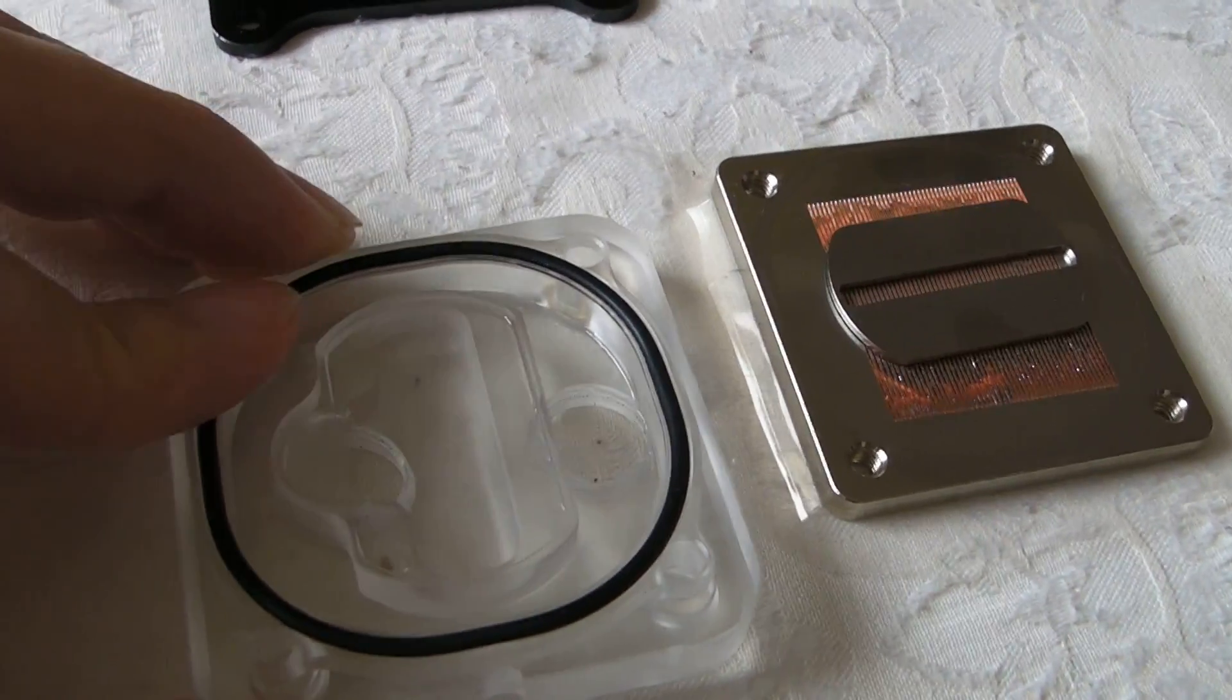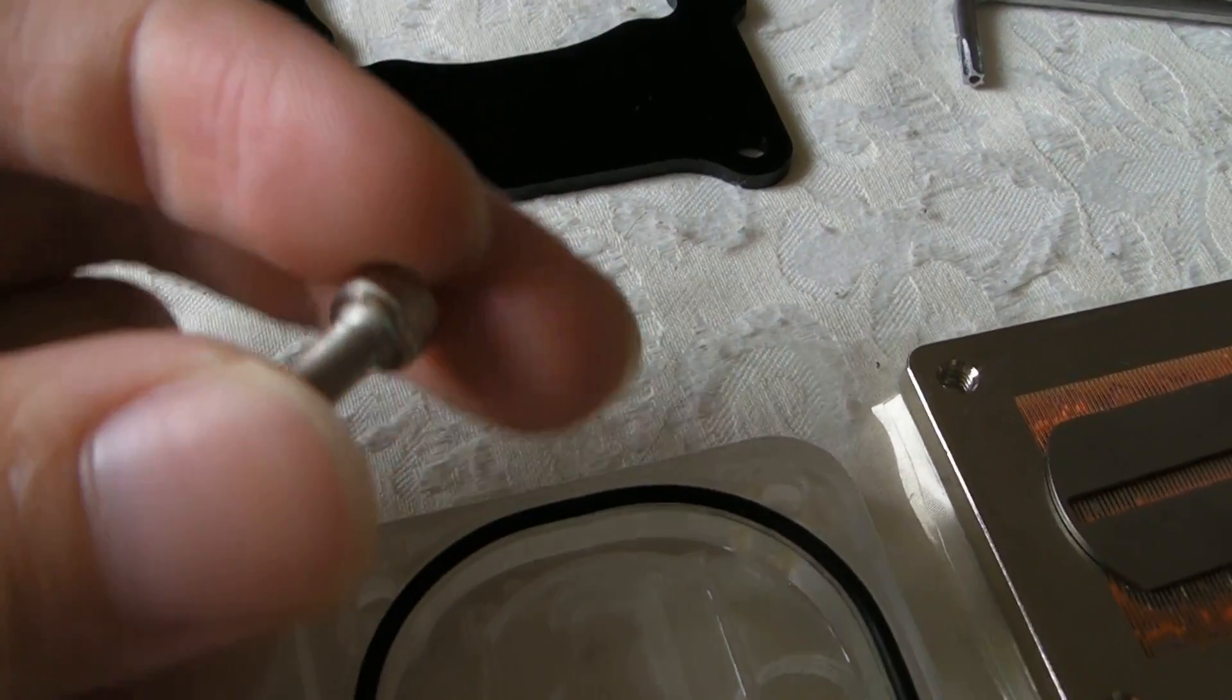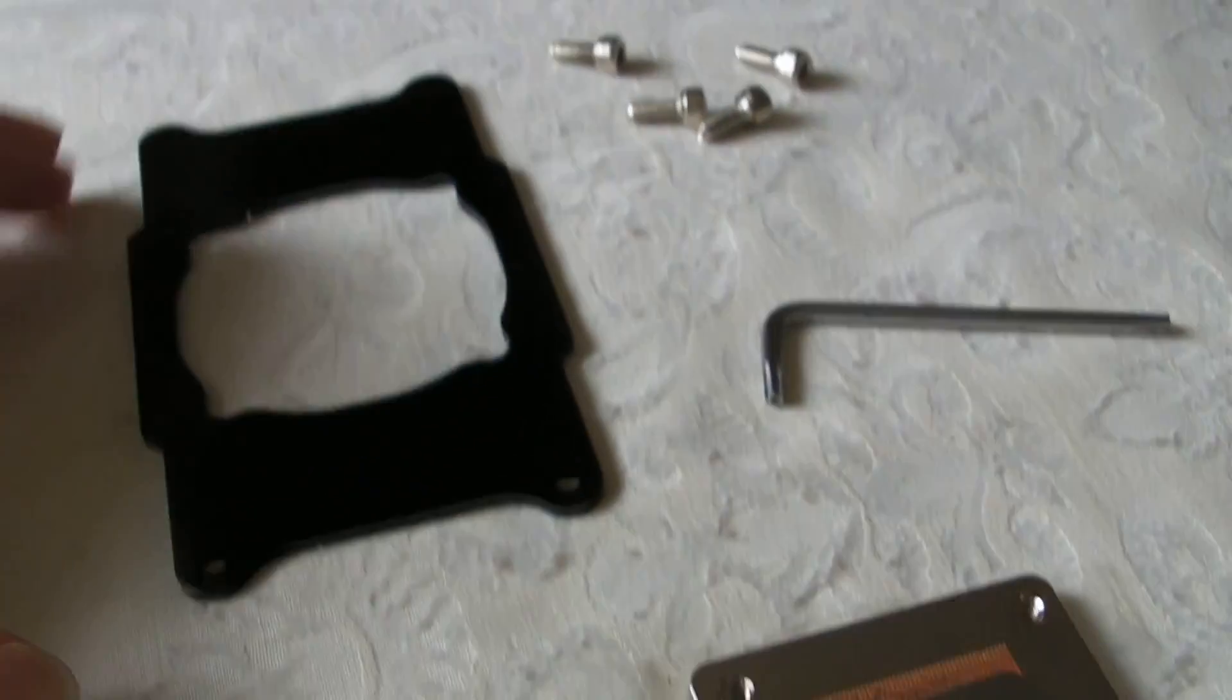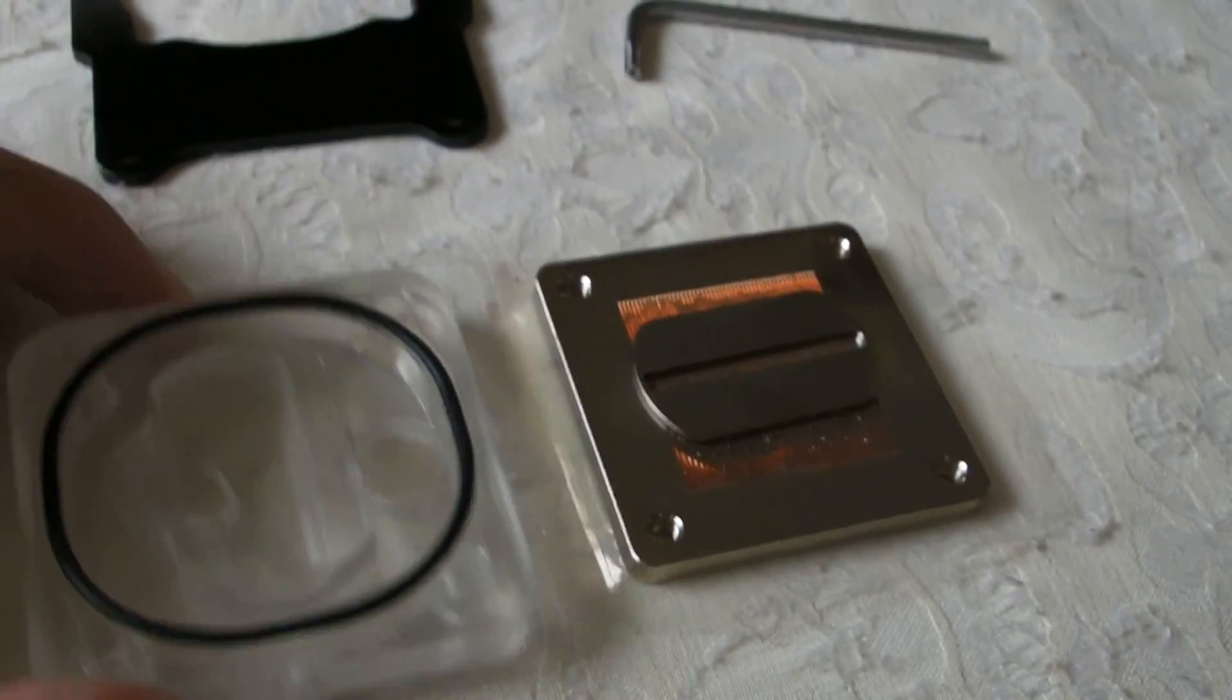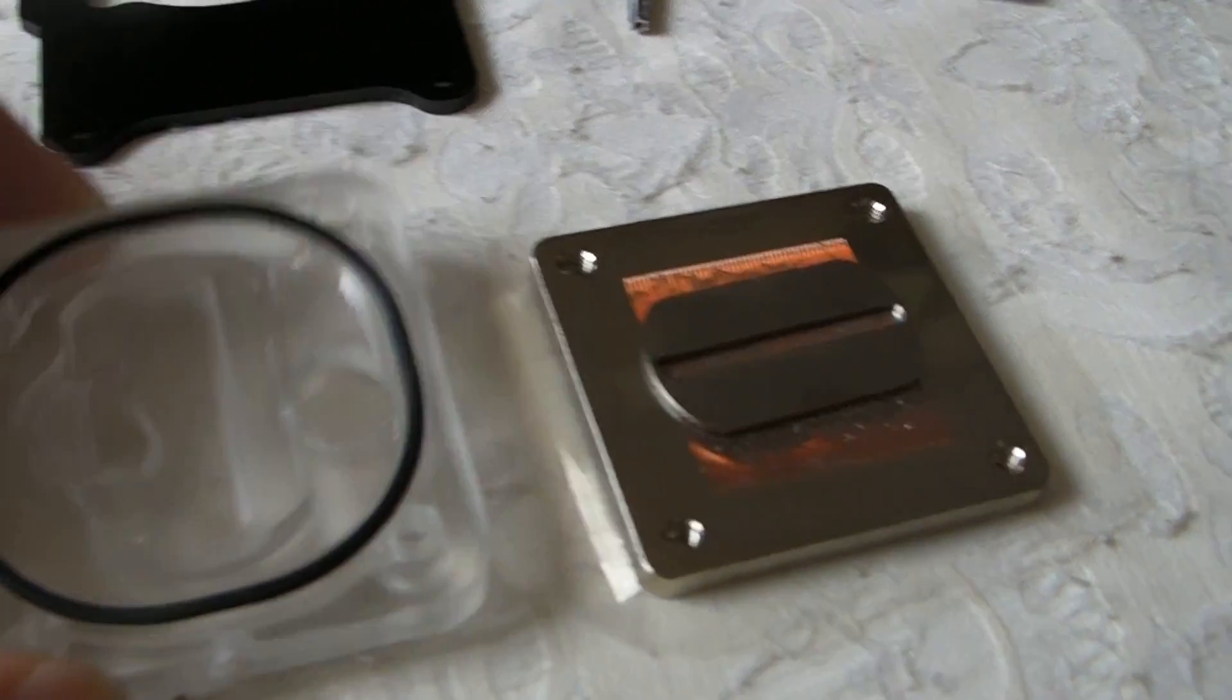The screw itself uses a 2.9mm hex key. Once you take it apart, everything just falls apart. It's very simple, no tricks whatsoever.